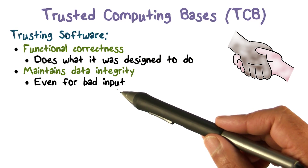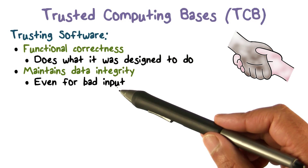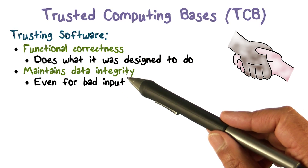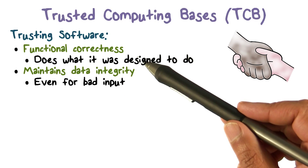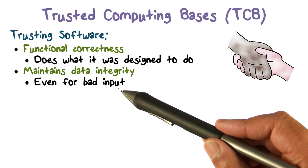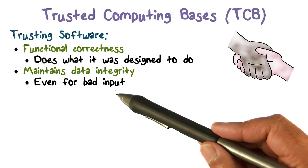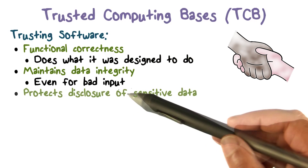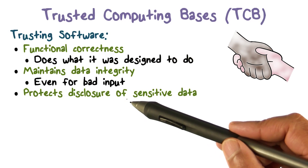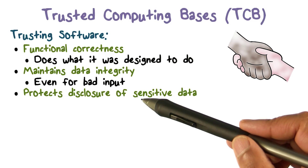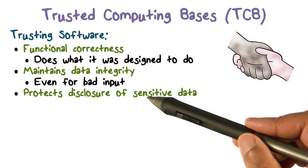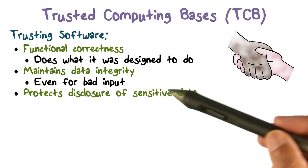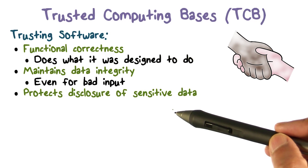We want it to maintain that integrity even in the presence of bad input. We do expose some interface or API, so bad guys can try to use it in ways that we didn't expect, or give it bad input. So the integrity that should be maintained by the trusted computing base is actually maintained in the presence of a threat model where an adversary may even try to provide bad inputs. Obviously there is sensitive data that it uses and protects for other users and applications, and it has to address the confidentiality of this sensitive data — it shouldn't be disclosed to somebody who doesn't have access to it.